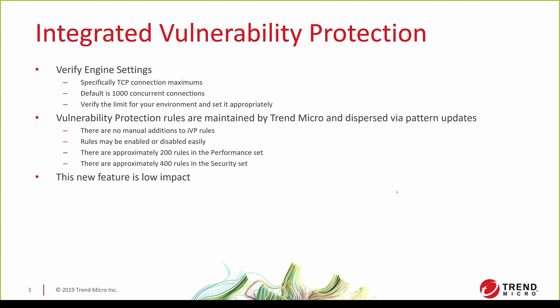One other thing with vulnerability protection rules: they are completely maintained by Trend Micro and dispersed through pattern updates. It is very important to have your agents updating regularly and often, because these patterns are the conglomeration of our research on a global scale. There are no manual additions to IVP rules. The rules currently in the pattern set are easily enabled or disabled via the Apex Central policy. There are approximately 200 rules within the performance mode set and about 400 in the security set. The security set also has a more vigorous block than the performance set.